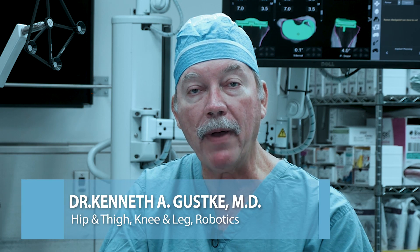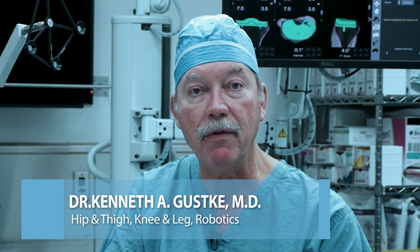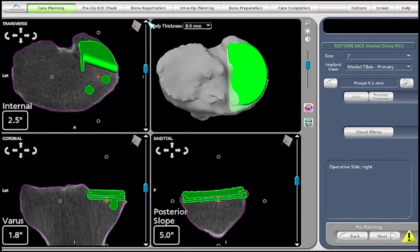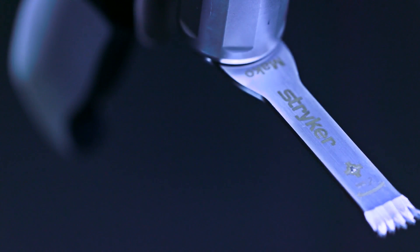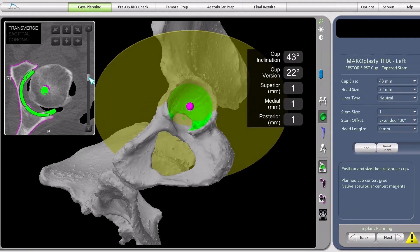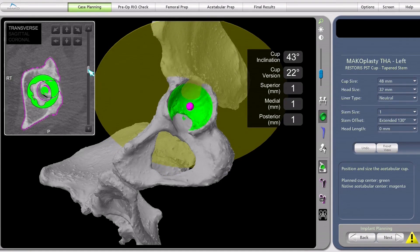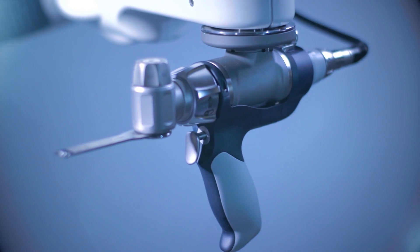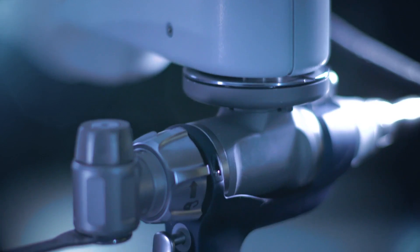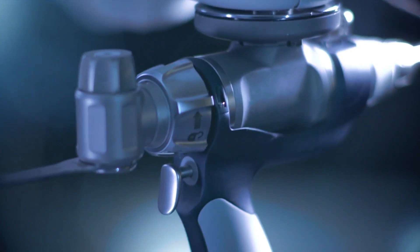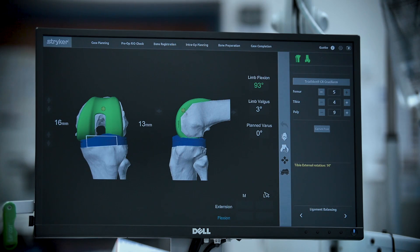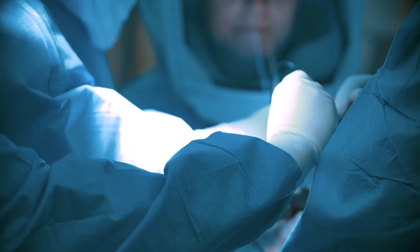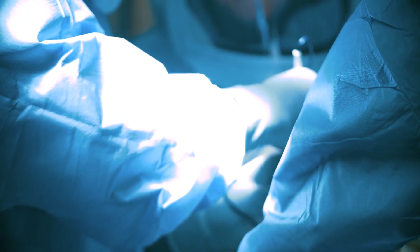What the robotic system allows us to do is multifactorial. We can actually customize the placement of the implants, the size of the implants so they will fit the patient perfectly. We can align the implants so that we know what their overall axial alignment is. We sort of anticipate what their alignment was before they became arthritic and try to reestablish that. And we can do that with high precision, which we've never been able to do before the advent of use of robotics.